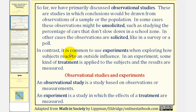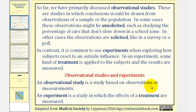In contrast, it is common to use experiments when exploring how subjects react to an outside influence. In an experiment, some kind of treatment is applied to the subjects and the results are measured. So an observational study is a study based on observations or measurements, and an experiment is a study in which the effects of a treatment are measured.